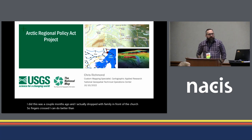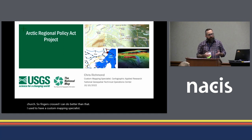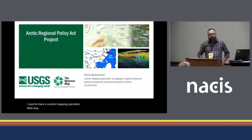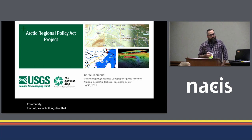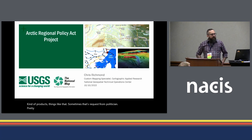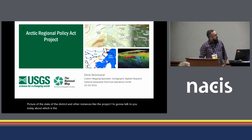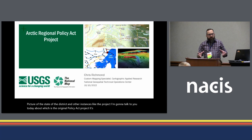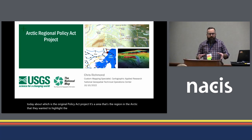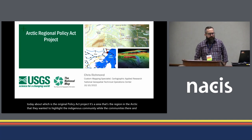I'm a custom mapping specialist with USGS, and with that I get the projects that come in to USGS that don't really fit one of our standard products, like our US Topo or things like that. Sometimes that's a request from a politician to pretty-picture their state or their district. In other instances, like the project I'm going to talk to you about today, which is the Arctic Regional Policy Act project, it's a region in the Arctic where they wanted to highlight the indigenous community and build on a previous project.